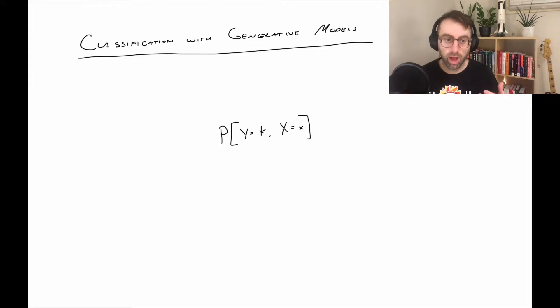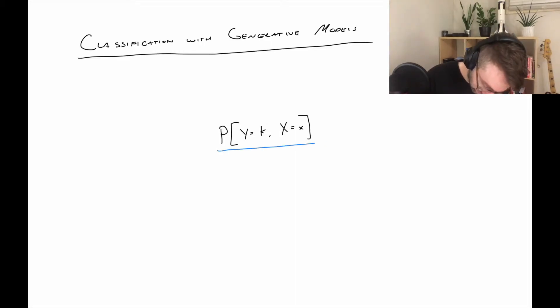So, how do we then take this joint distribution and make classifications? Well, it turns out that we still want that conditional distribution in order to make the classifications. So what we're going to do here is divide by probability x equals x.